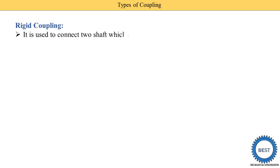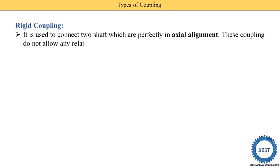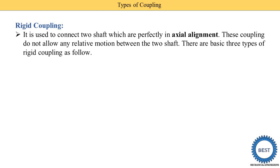In rigid coupling, the axes of both shafts are in alignment, meaning they are on the same line. This is called axial alignment. Rigid coupling is used to connect two shafts which are perfectly in axial alignment, meaning the axes of both shafts are in the same line.